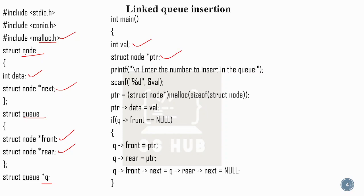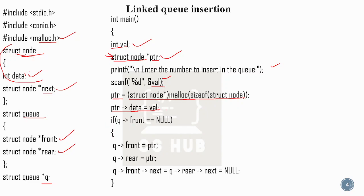We declare struct node star PTR. The first step is to enter the number to insert. That number is stored in val. We create a new node: PTR equals malloc of size of struct node. Now the node is created. Pointer data has two fields: data and next. So pointer data is equal to val, then pointer next is null.